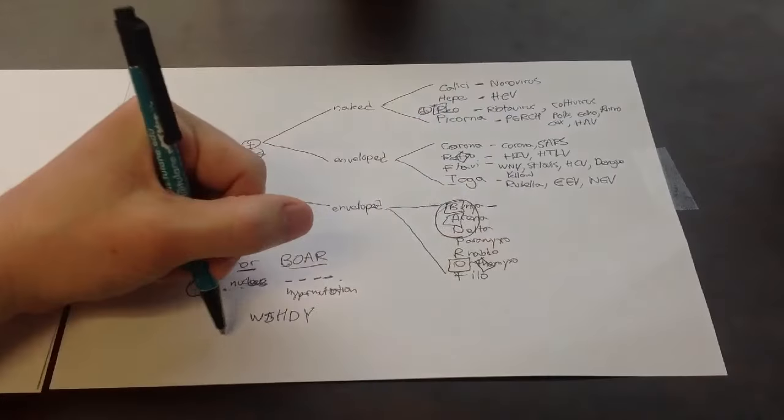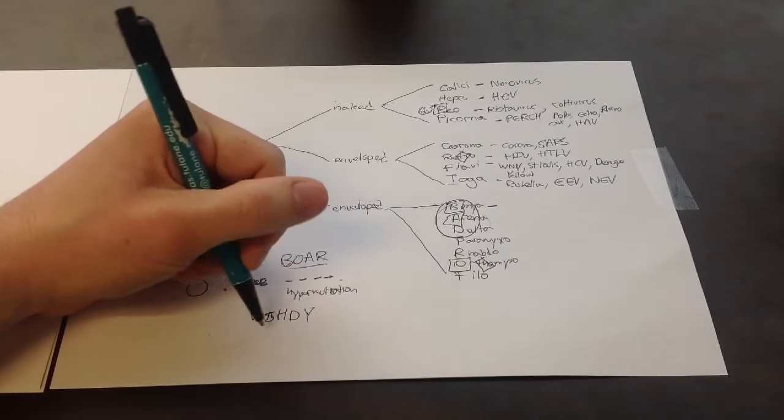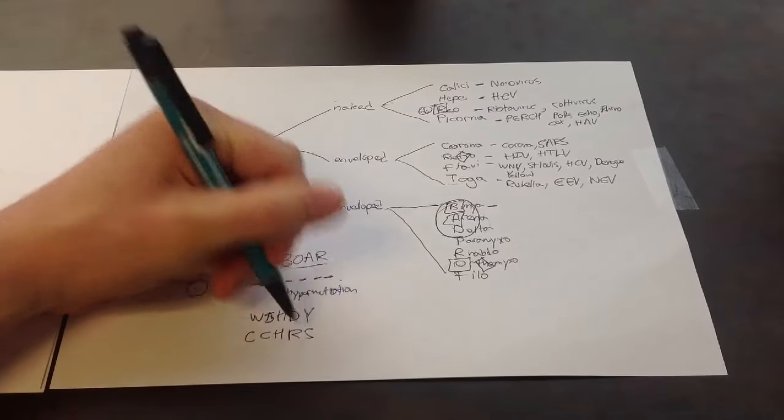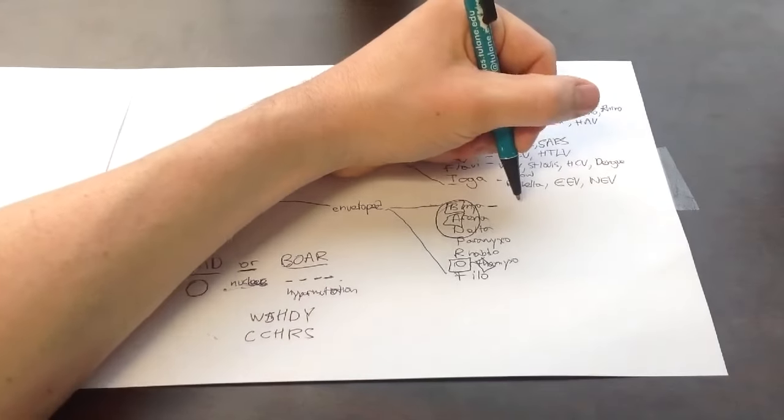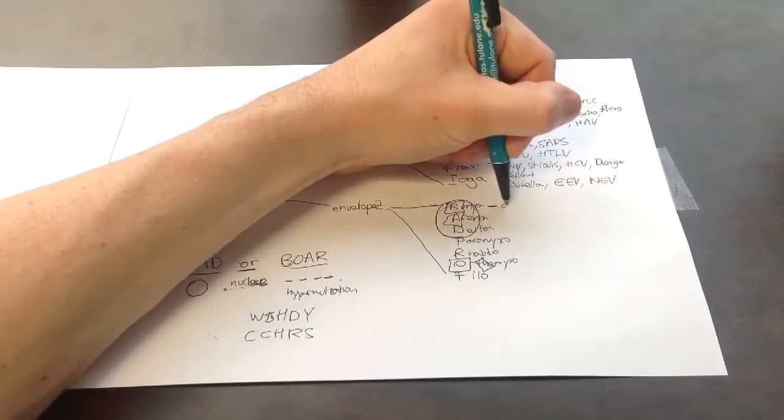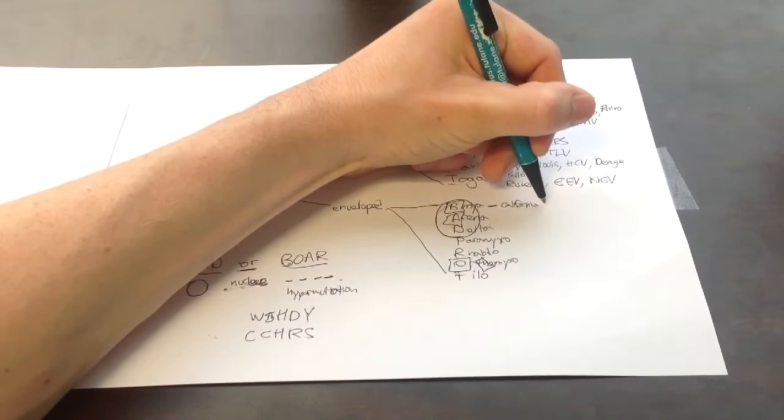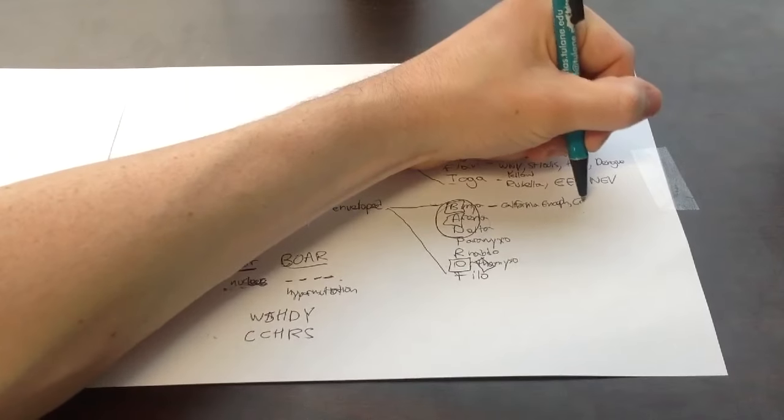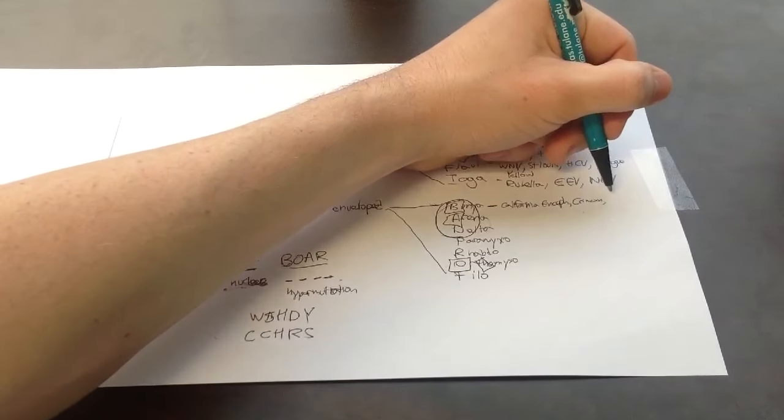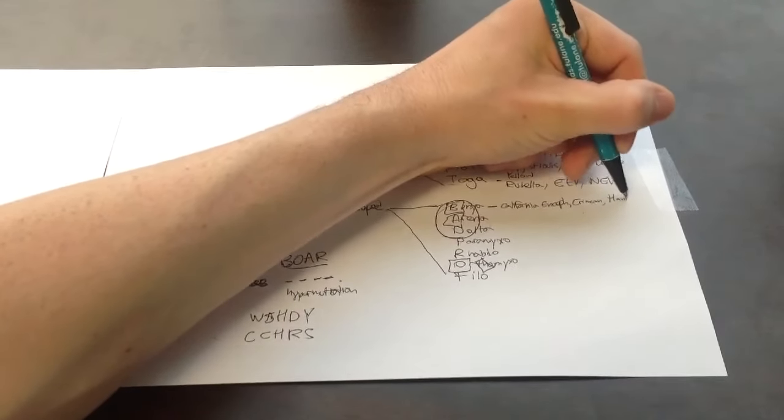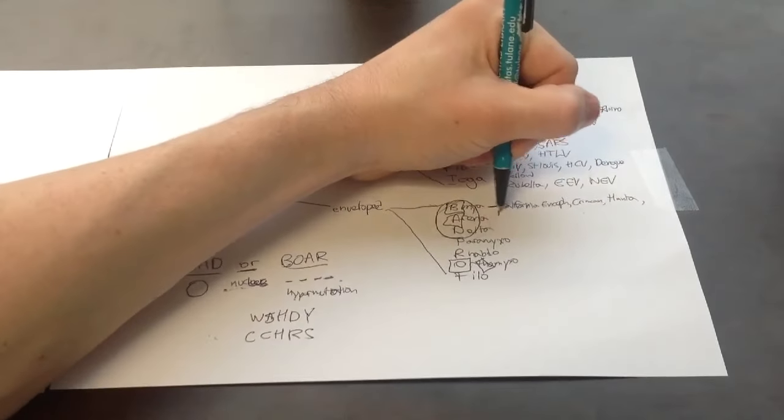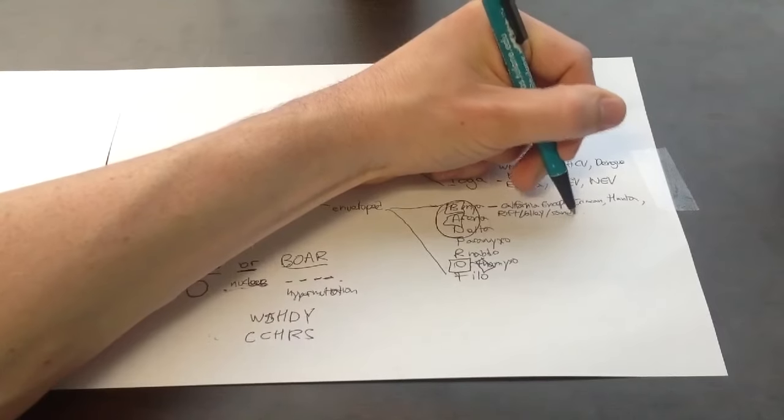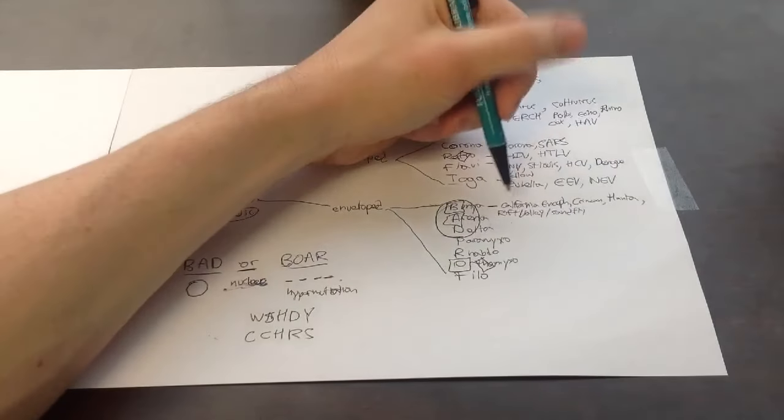Bunya has a ton of viruses too. I remember bun catchers. Another mnemonic. C-C-H-R-S. Catchers. Bun catchers. C is for California encephalitis. And then we have another C. C-C-H-R-S. And then hantavirus. And then the rift valley slash sandfly virus. Bun catchers. C-C-H-R-S.